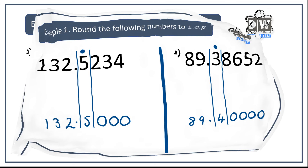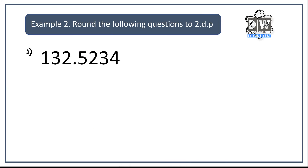Now we're going to two decimal places. I'll help you identify and column the number, then I'd like you to do the rest yourself. Even if you get it wrong, it doesn't matter — in fact, if you get it wrong, that's sometimes the best thing that can happen, because you'll really focus on what you need to know. Give it a go, come back and see if you've got it right. I think you'll be fine.